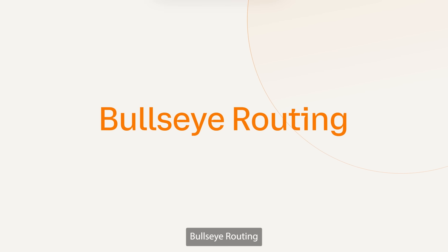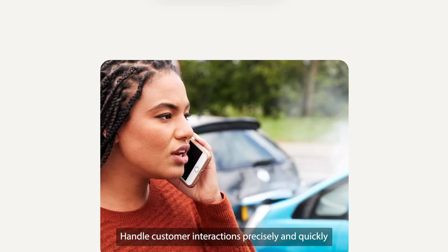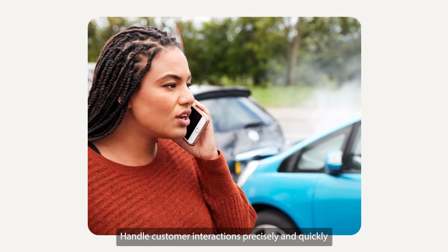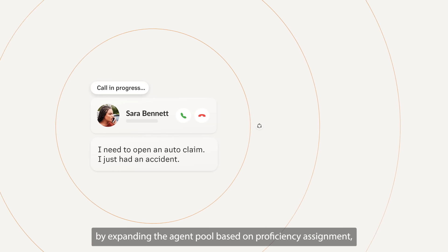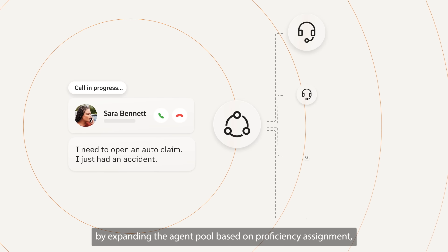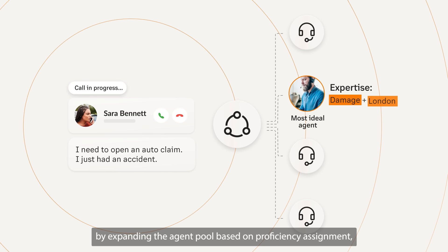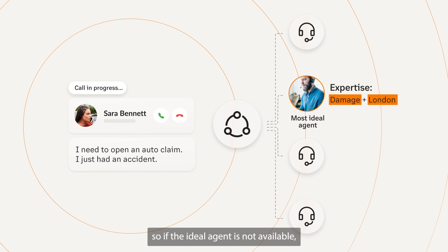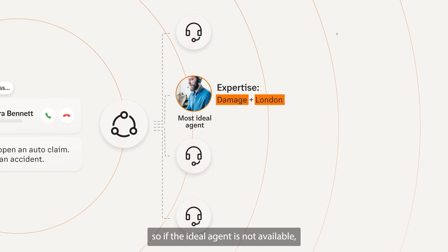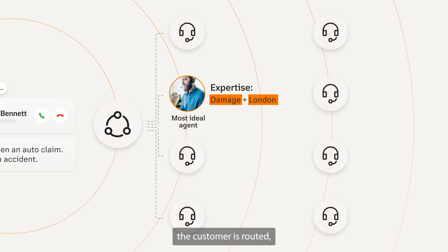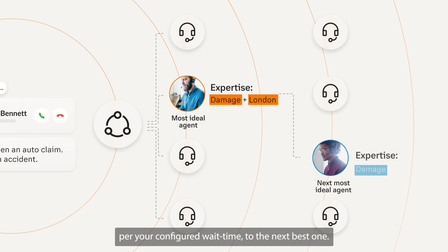Bullseye Routing. Handle customer interactions precisely and quickly by expanding the agent pool based on proficiency assignment, so if the ideal agent is not available, the customer is routed after your configured wait time to the next best one.